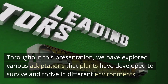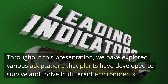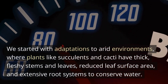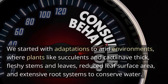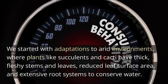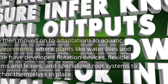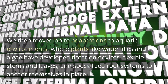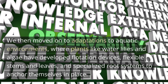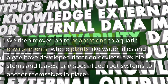Throughout this presentation, we have explored various adaptations that plants have developed to survive and thrive in different environments. We started with adaptations to arid environments, where plants like succulents and cacti have thick, fleshy stems and leaves, reduced leaf surface area, and extensive root systems to conserve water. We then moved on to adaptations to aquatic environments, where plants like water lilies and algae have developed flotation devices, flexible stems and leaves, and specialized root systems to anchor themselves in place.